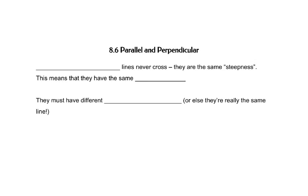In this section we'll look at parallel and perpendicular. First we'll look at parallel. Parallel lines never cross. That means they have to have the same steepness. Remember that slope tells us about the steepness. So if they have the same steepness, they have the same slope.